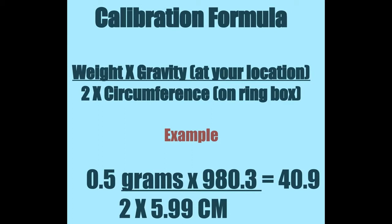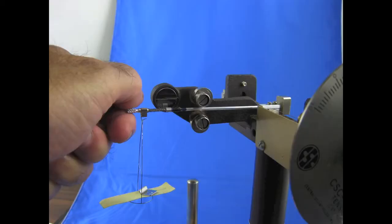If the dial reading you recorded and the calibrated number are within 0.5 dynes of each other, you are finished. If the two numbers are farther apart, however, you will have to adjust the torsion arm.